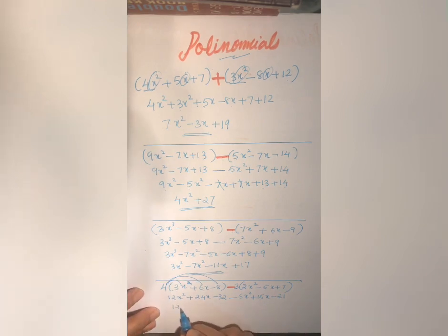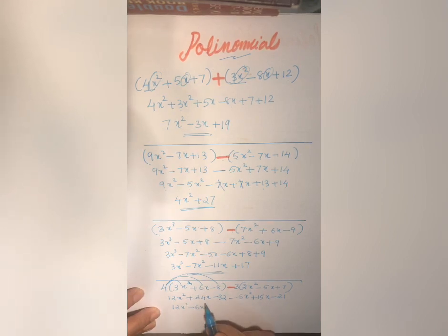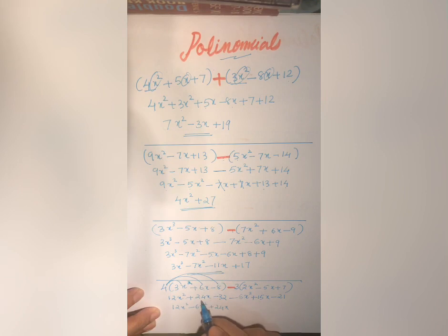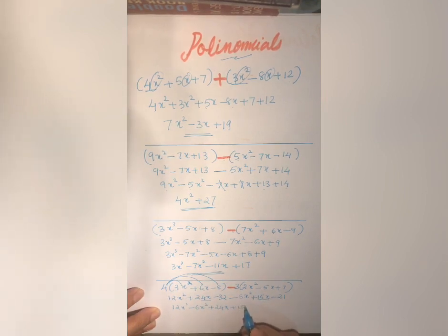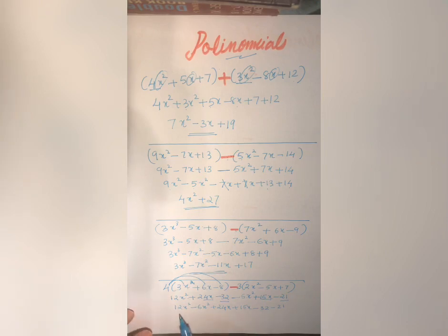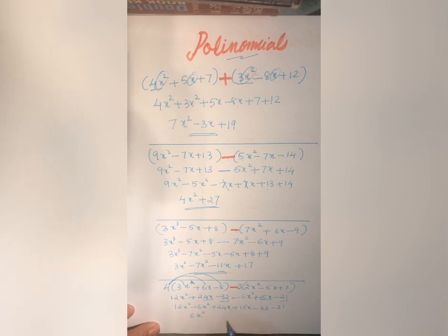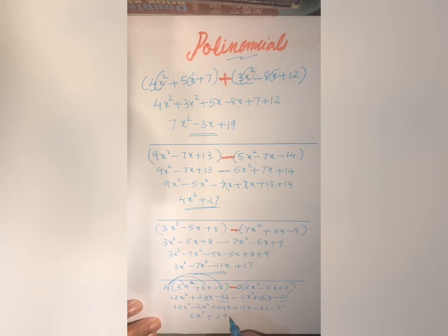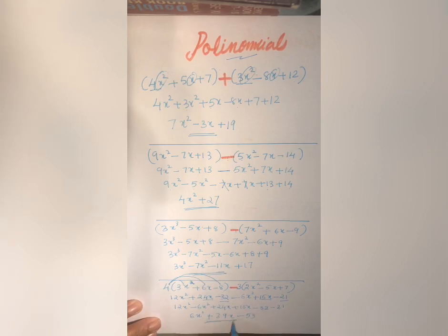Now combine the like terms: 12x square minus 6x square, plus 24x plus 15x, minus 32 minus 21. 12 minus 6 is 6x square. 24 plus 15 is 39x. Minus 32 minus 21, we need to add, is minus 53. So the final answer is 6x square plus 39x minus 53.